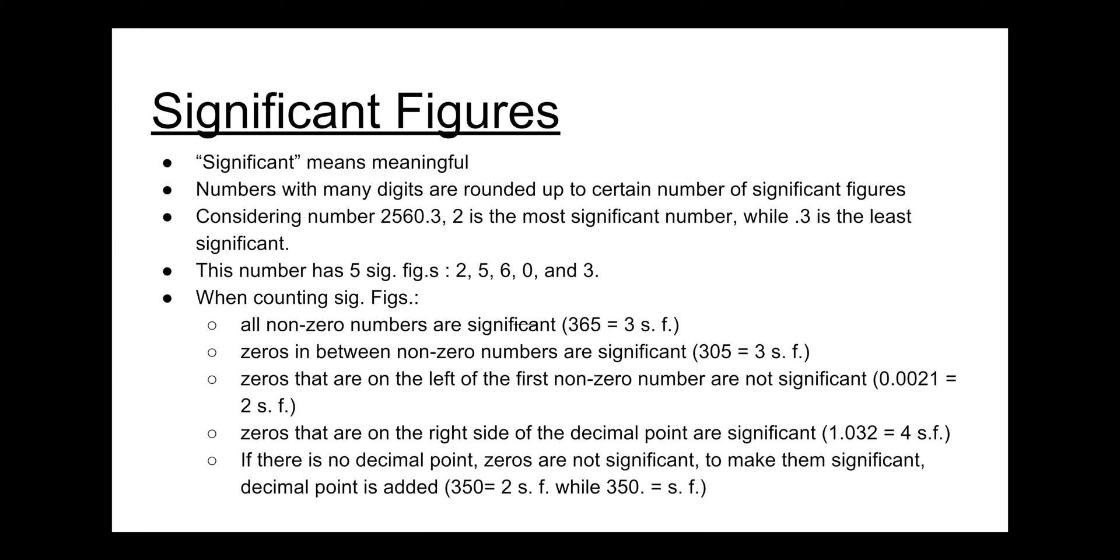Another rule is zeros in between non-zero numbers are significant. For example, in 305, zero is also a significant number.